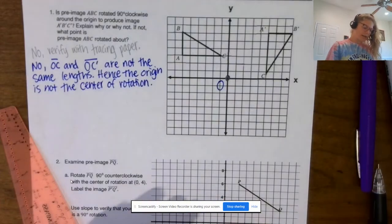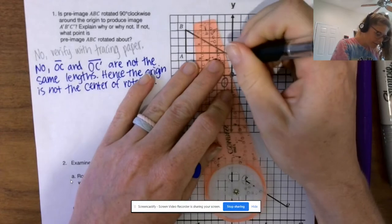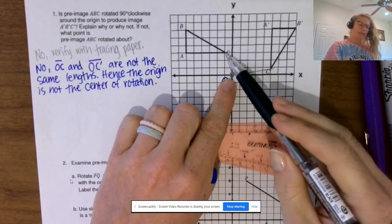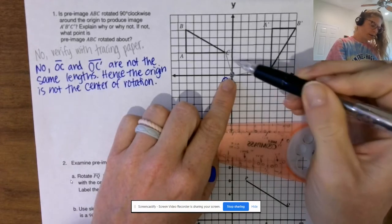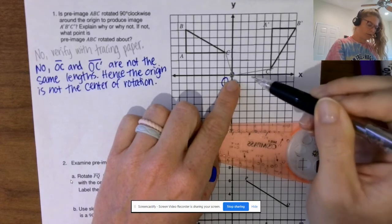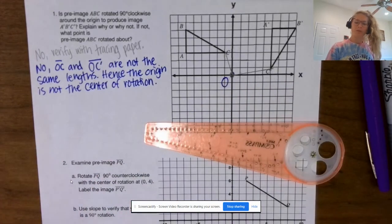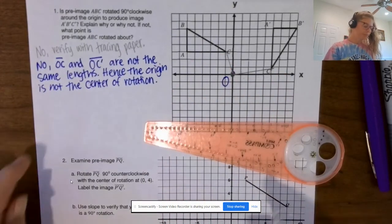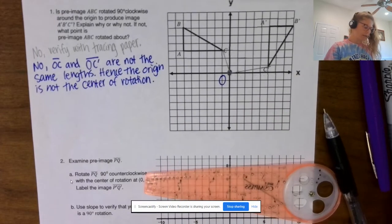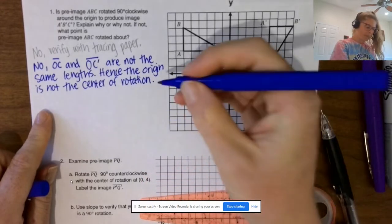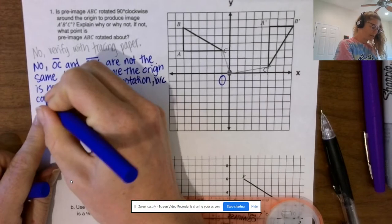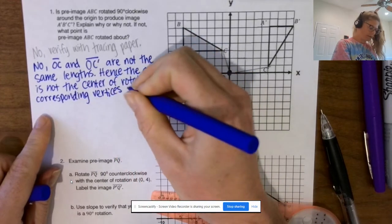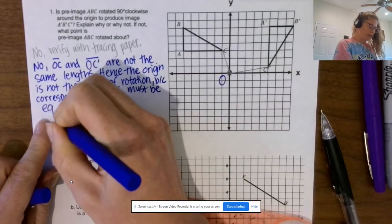If we take a look at OC, that segment can be the hypotenuse of a right triangle with legs 1 and 3, while OC′ is the hypotenuse of a triangle with legs 1 and 5 — obviously very different. We can also use the distance formula to find and compare these distances. Hence the origin is not the center of rotation, because corresponding vertices must be equidistant.